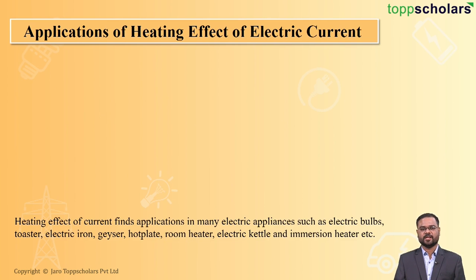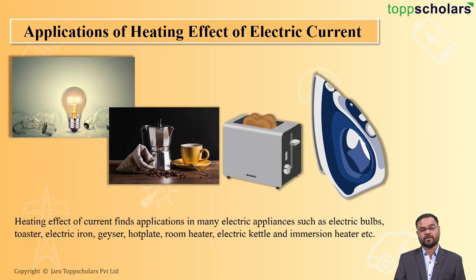Let us move on to the applications. There are many applications of the heating effect of electric current: electric bulbs, toasters, electric irons, geysers, hot plates, room heaters, electric kettles, and immersion heaters. In the diagrams you can see some of these applications — the first is the electric bulb, the second is an electric kettle, then a toaster, and finally the electric iron.